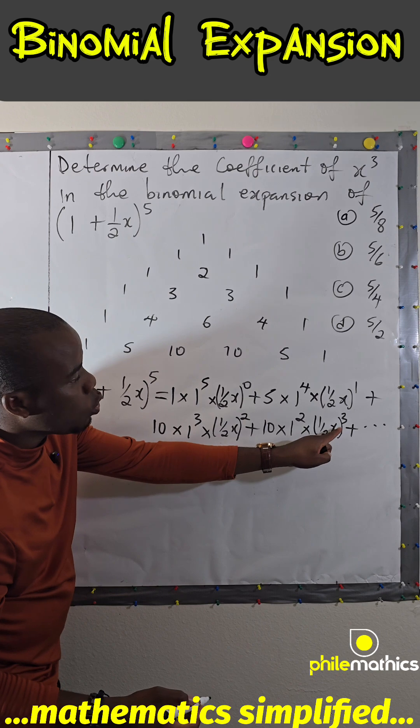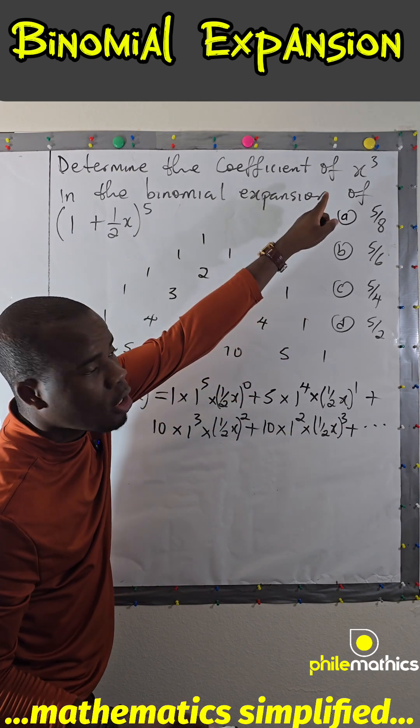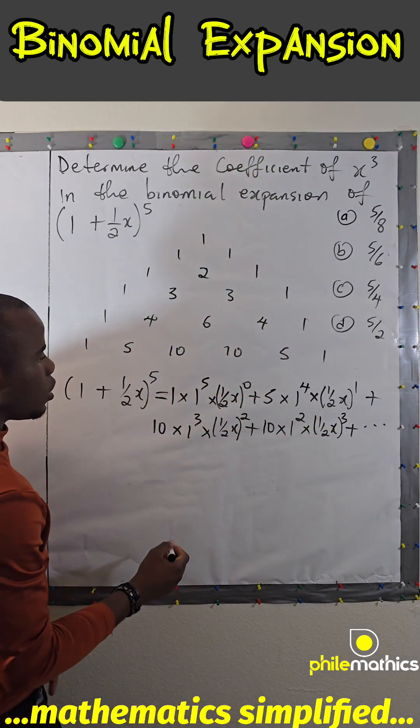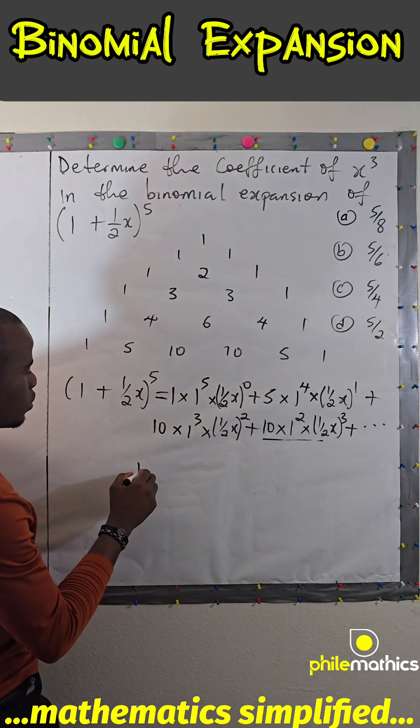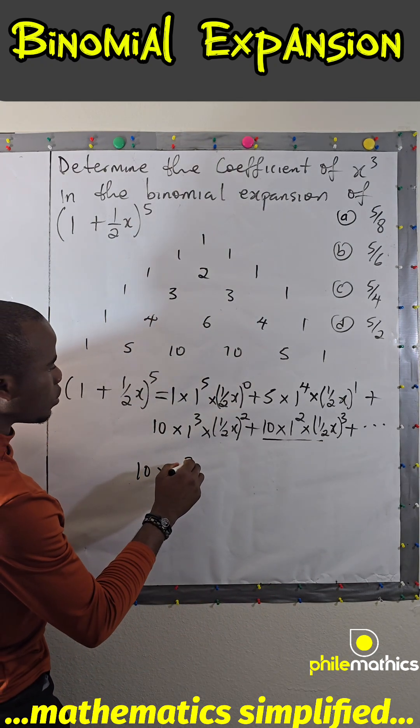So you just know that this is where you will have x cubed since we're interested in x cubed, so we won't write the rest. We're looking for this coefficient here. So 10 times 1 to the power 2.